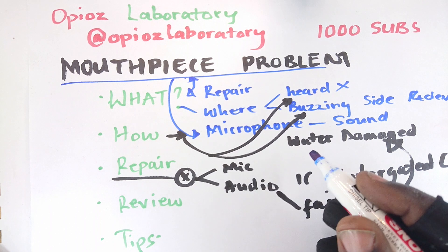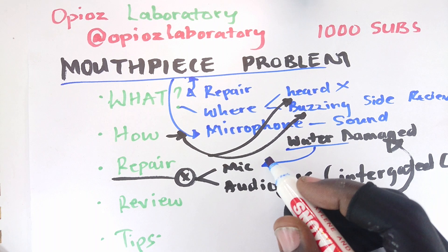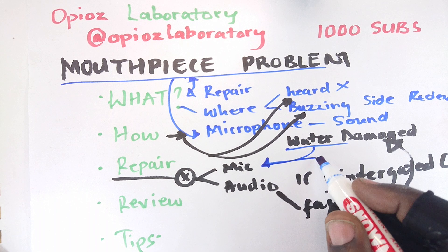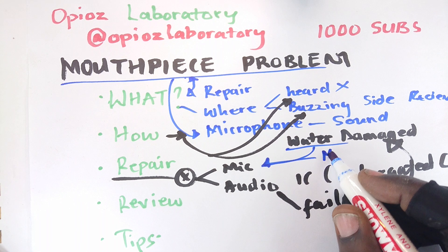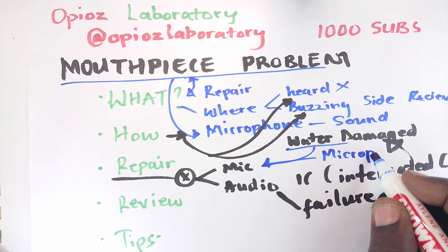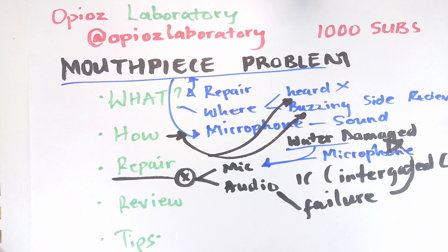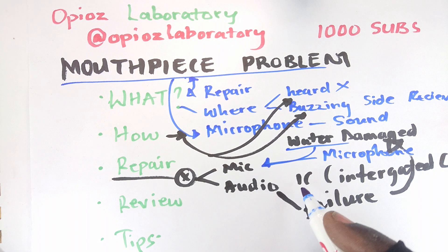Water itself can actually affect the mic directly, and this one is a bit straightforward — you simply deal with it by swapping out the mic. Microphones tend to be cheap, so it's also an easy way to be sure it's not your audio IC. Swap out the microphone, and if the sound issue is resolved and the person on the other end can hear you, then you know you don't have to deal with the audio IC.